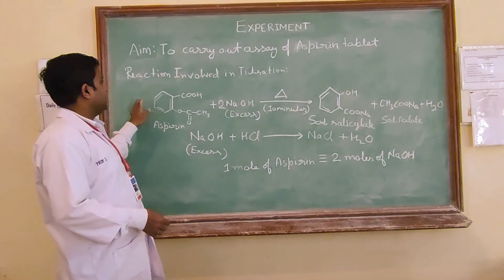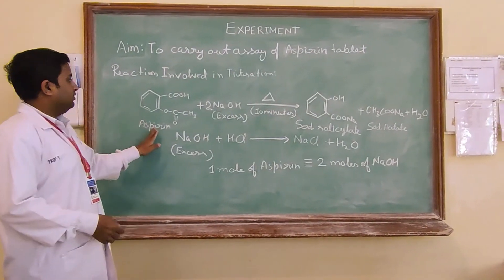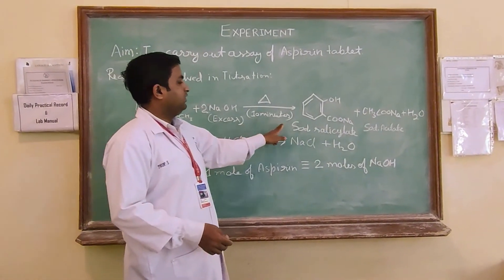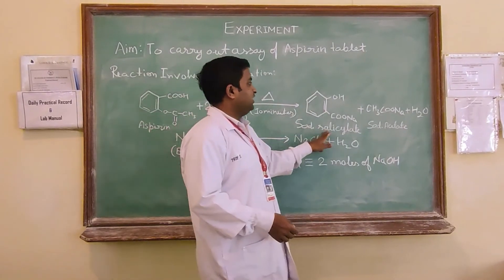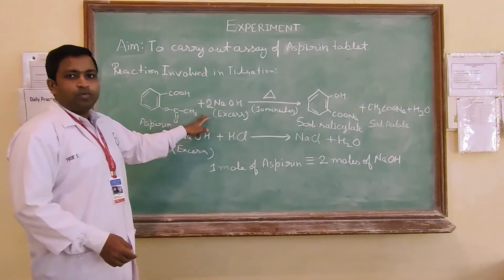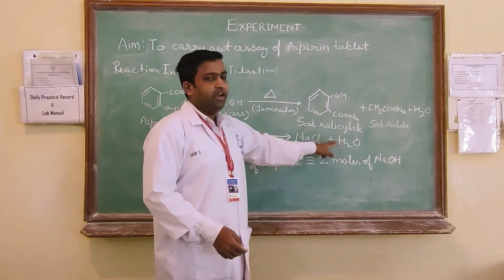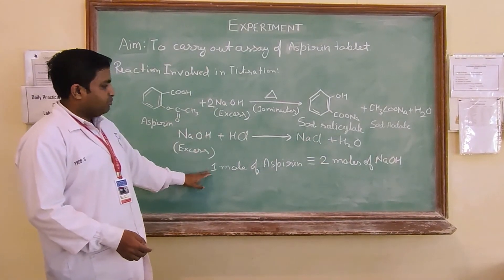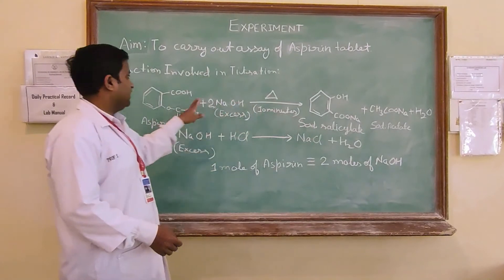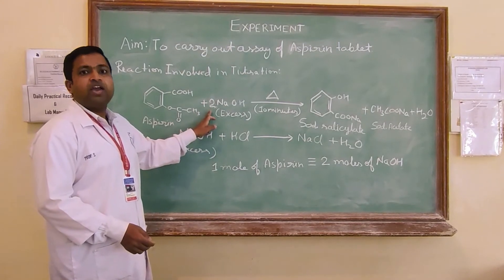Here we can see the reaction involved in the back titration of aspirin is aspirin reacts with 2 moles of NaOH in the hot condition and provides sodium salicylate, sodium acetate and water. The excess of NaOH further treated with concentrated HCl that gives NaCl and water. We can see that 1 mole of aspirin is equivalent to 2 moles of NaOH. Here in the titration 1 mole of aspirin reacts with 2 moles of NaOH.